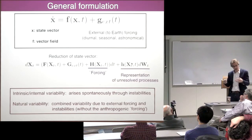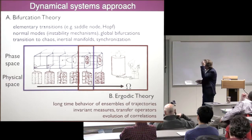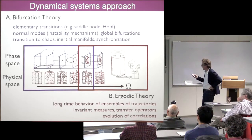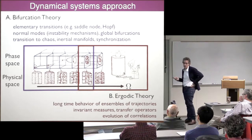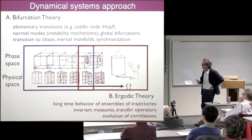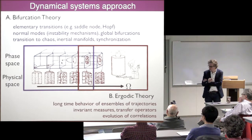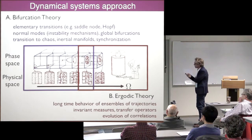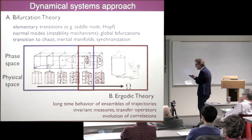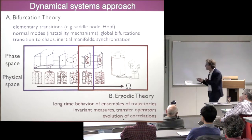If you categorize the dynamical systems approach, on one hand we look at very laminar-type flows. This is an example where you have a Taylor-Couette flow — from Abraham and Shaw, a very long book on dynamical systems — where you crank up the rotation of the inner cylinder. In the early stages you have a very laminar flow and transitions associated with elementary bifurcations. Eventually you end up in a very turbulent regime, and then you ask questions on the long-term behavior of ensembles of trajectories — invariant measures, transfer operators — and you're interested in evolution of correlations between variables, which gives you a lot of information on the behavior of the system.